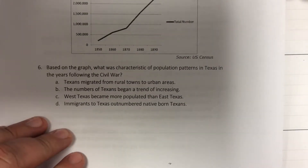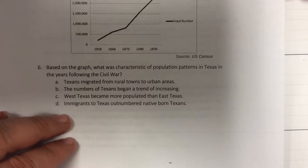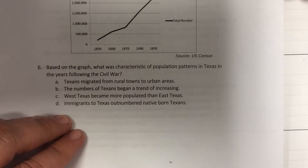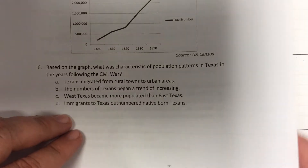Question 6: Based on the graph, what was the characteristic of population patterns in Texas in the years following the Civil War? Texans migrated from rural towns to urban areas; the number of Texans began a trend of increasing; West Texas became more populated than East Texas; immigrants to Texas outnumbered native-born Texans.